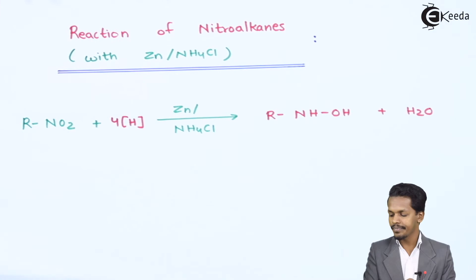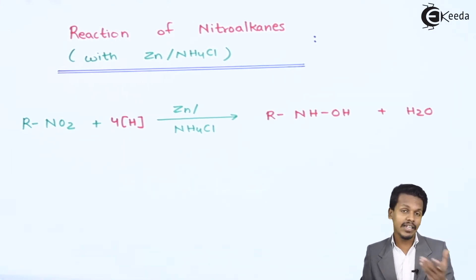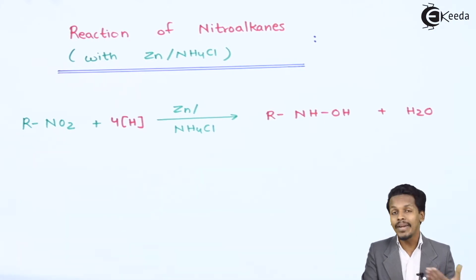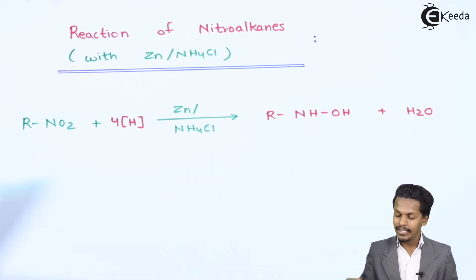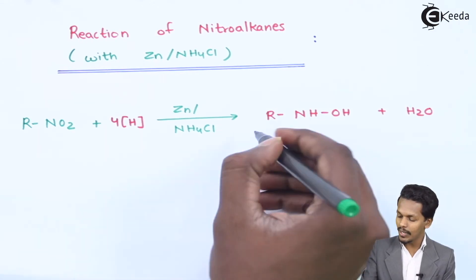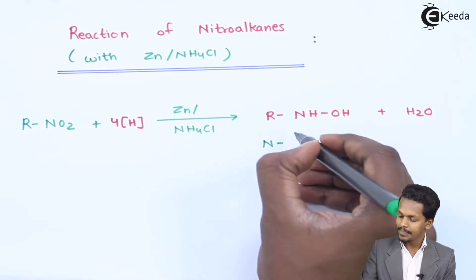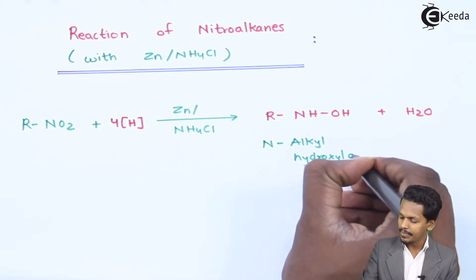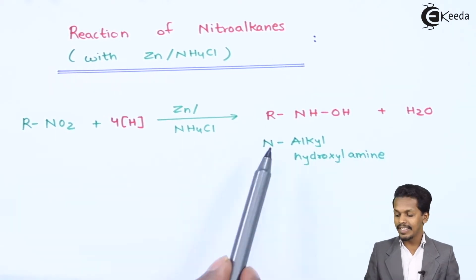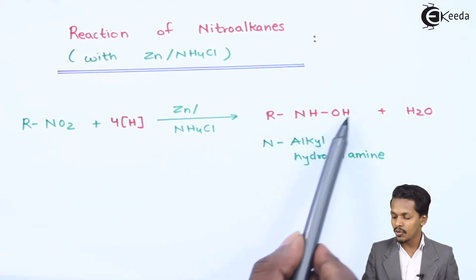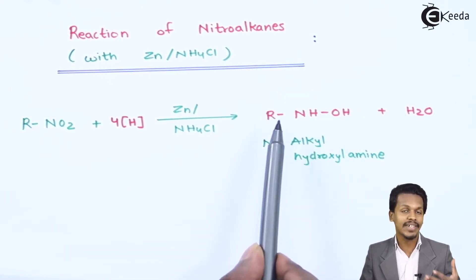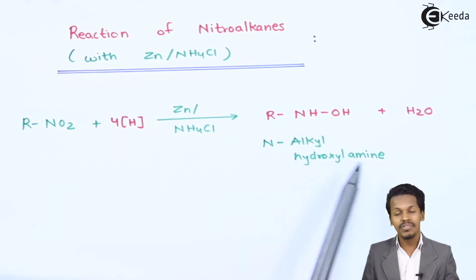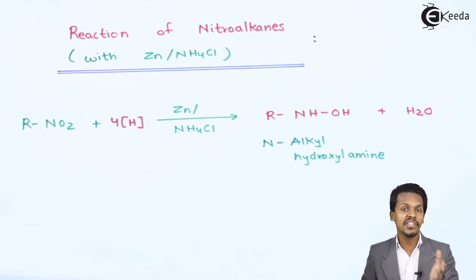The product is RNHOH, along with the byproduct water (H2O). This is a reduction process, but RNO2 is not completely converted into an amine group. Instead, the product is known as N-alkyl-hydroxylamine, where the hydroxyl group and the alkyl group are both attached directly to the nitrogen.